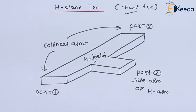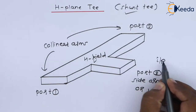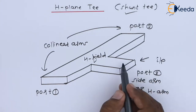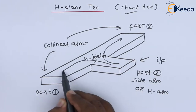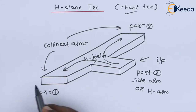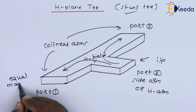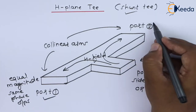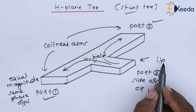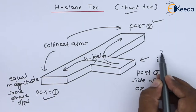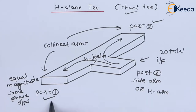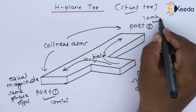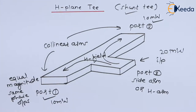Talking about the behavior of H-plane T: when we provide input at port number 3, it will produce two equal parts of the input power — equal magnitude and same phase — at port number 1 and port number 2. For example, if we have 20 milliwatts of power as input, 10 milliwatts will come out of port number 1 and 10 milliwatts out of port number 2, both in phase.